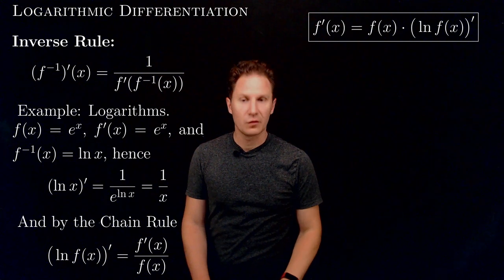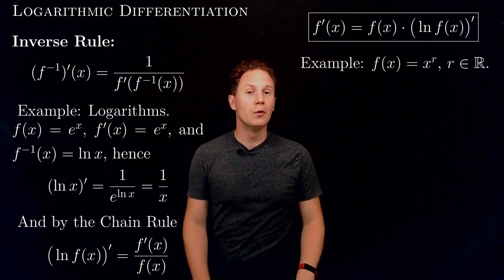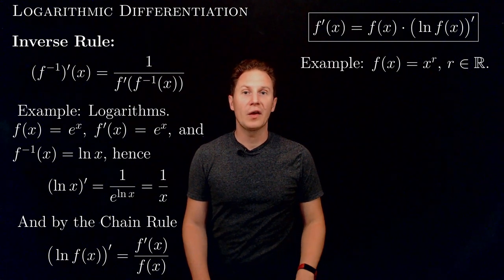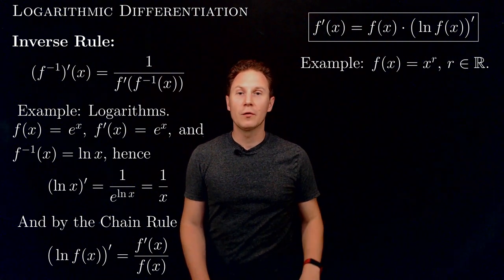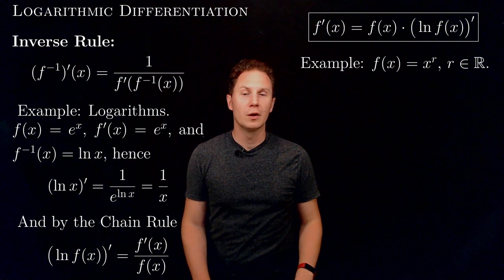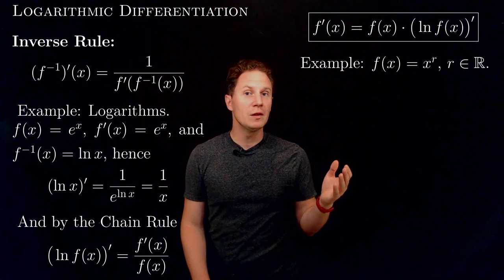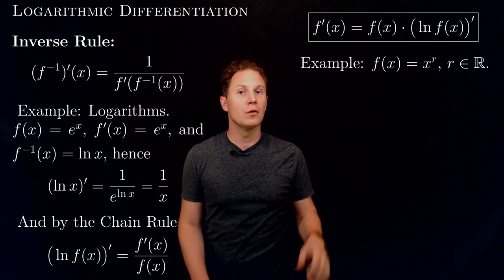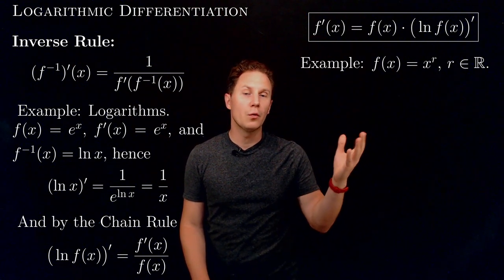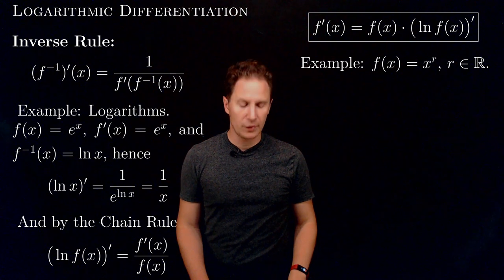Let's see logarithmic differentiation in action on an example where f of x equals x to the r, and r, the exponent, is any real number. Now you may think computing the derivative of this function is a simple application of the power rule, but let me remind you that so far we've only established the power rule for positive integer exponents, negative integer exponents, and rational exponents — fractions. So if r is the square root of 2, we do not know if the power rule applies.